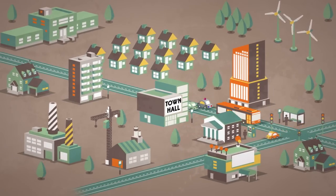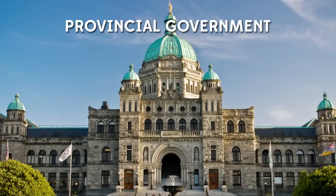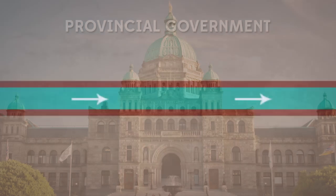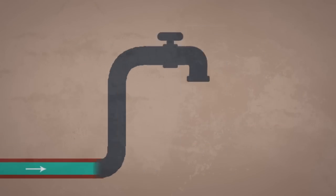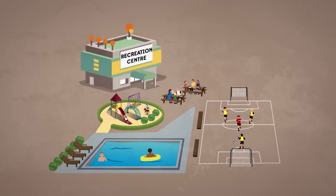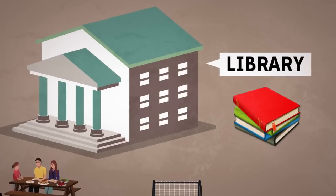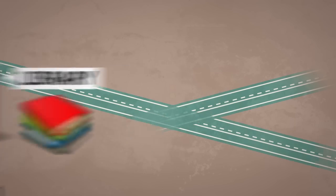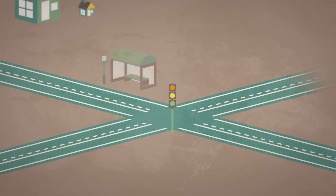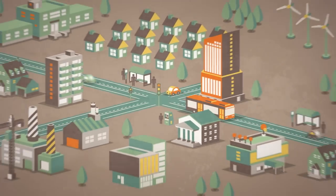Local governments receive their powers from the provincial government. They're responsible for local and everyday matters, such as water, parks, community and recreation centers, libraries, roads and sidewalks, transportation systems, and much more.